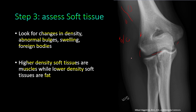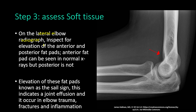On the lateral elbow radiograph, inspect for elevation of the anterior and posterior fat pads. The fat pads are visible because fat has lower density than muscle and appears darker on x-ray. The anterior fat pad is located inside the coronoid fossa and the posterior fat pad is inside the olecranon fossa. The anterior fat pad can be seen in normal x-rays but the posterior fat pad cannot.